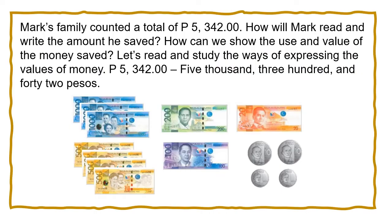Let's go back to Mark's family. Mark's family counted a total of P5,342. How will Mark read and write the amount he saved? How can we show the use and value of the money saved? Let's read and study the ways of expressing the values of money. There are two ways of writing and reading an amount of money: the first one is in symbol, and the other one is in words.